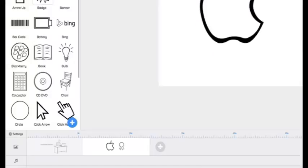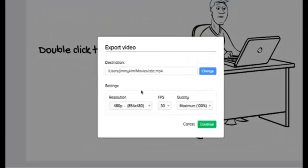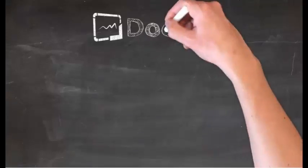You can change the length of each animation and slide simply by dragging and clicking. Once you're done, you can export your video right to your computer in multiple resolutions, frames, and quality. And that's it.